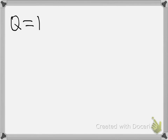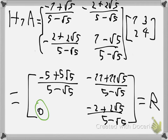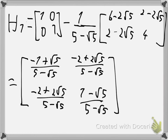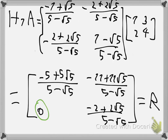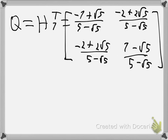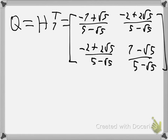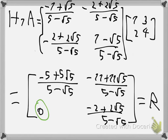Your Q would be equal to H1 transpose. If you transpose H1 it doesn't change anything here — those two off-diagonal elements swap but they are the same. So that is your Q, and you can rewrite A as Q*R, giving you both R and Q.